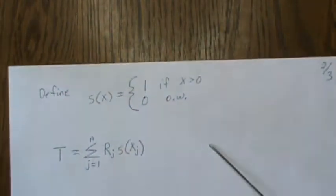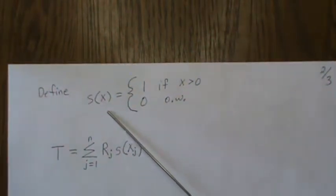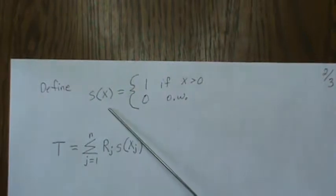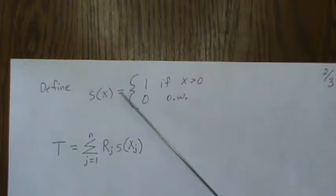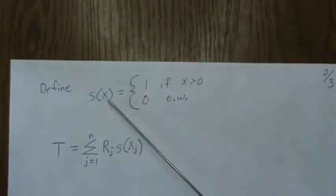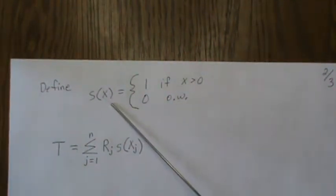If we create a little function called a sign function, if the function value is positive, then it generates a one. If it's negative, it generates a zero.